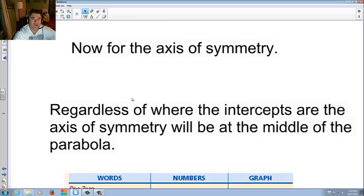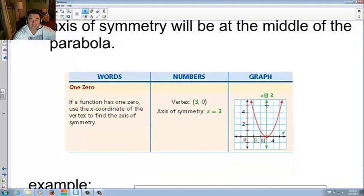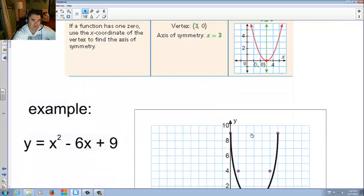Now for the axis of symmetry. Regardless of where the intercepts are, the axis of symmetry will be at the middle of the parabola. In other words, it divides it, cuts it in half if you remember. It's basically like the mirror, that one side to the other. Now, if you have 1 zero, if it touches like one intercept, if the function had 1 zero, use the x-coordinate of the vertex to find the axis of symmetry.